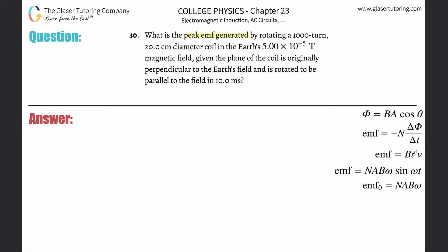Number 30, what is the peak EMF generated by rotating a 1,000-turn, 20 centimeter diameter coil in the earth's 5 times 10 to the minus 5th tesla magnetic field, given the plane of the coil is originally perpendicular to the earth's field and is rotated to be parallel to the field in 10 milliseconds.